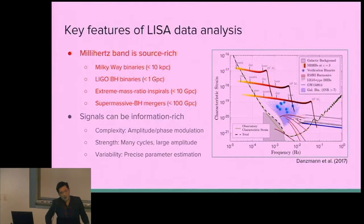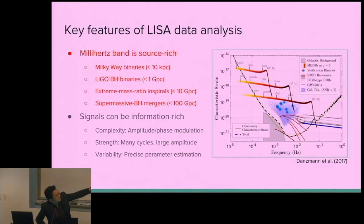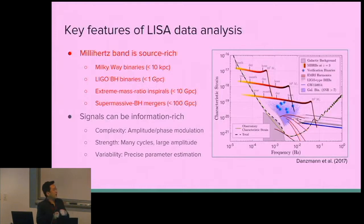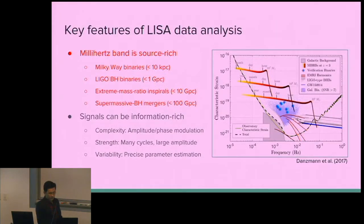Further out to 10 gigaparsecs, LISA will see the capture and inspiral of stellar mass compact objects into supermassive black holes at galactic centers — known as extreme mass ratio inspirals, or EMRIs. Out to 100 gigaparsecs, LISA will see mergers of supermassive black holes when galaxies collide. These are extremely energetic and can be observed up to very high redshift. We say the LISA millihertz band is source-rich and also information-rich.